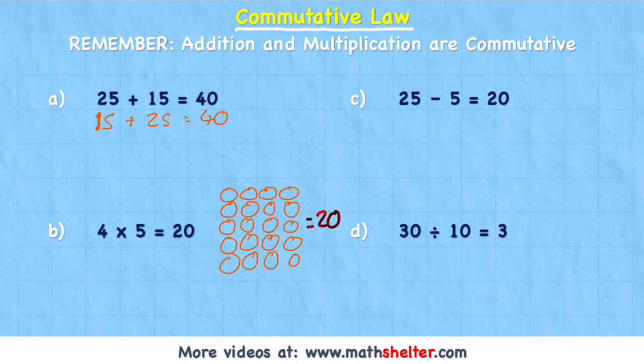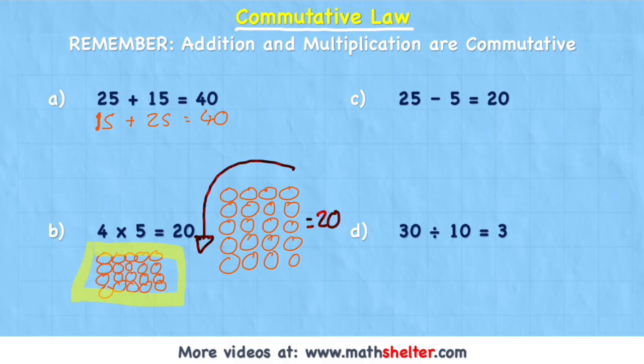But it wouldn't matter if I got this array and I just spun it around 90 degrees and ended up with 5 on the top as a row, just like this, and 4 on my column. Let's fill it in again. There we go. So this array has the same value as this array. It doesn't matter which way around I put the numbers, I'm still going to end up with 20.